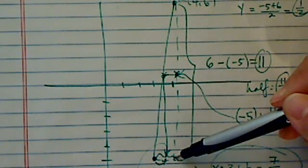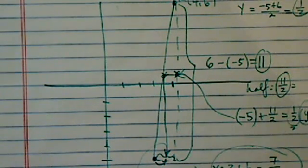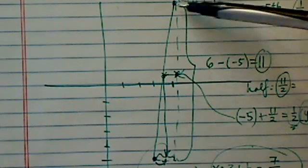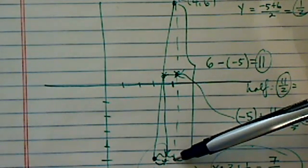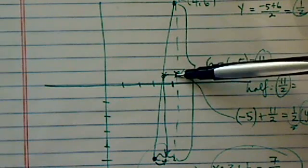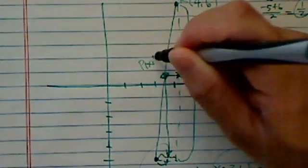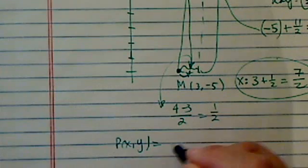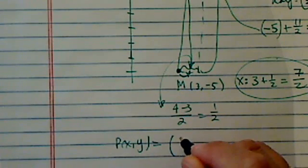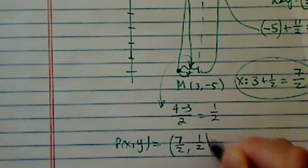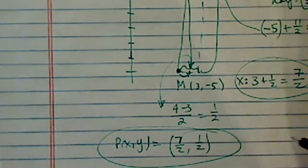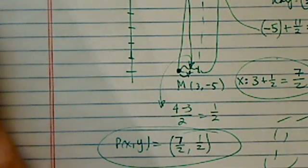We're just calculating the distance. Forget all the formulas — no big deal. Draw those points out, figure out how far y changed, go halfway, then come down halfway. Figure out how far x changed, go halfway, and you'll get the midpoint. So in our case, P of (x, y) is: x equals 7 over 2, y equals one half. Hope this helps. Have a confident day. Thank you.